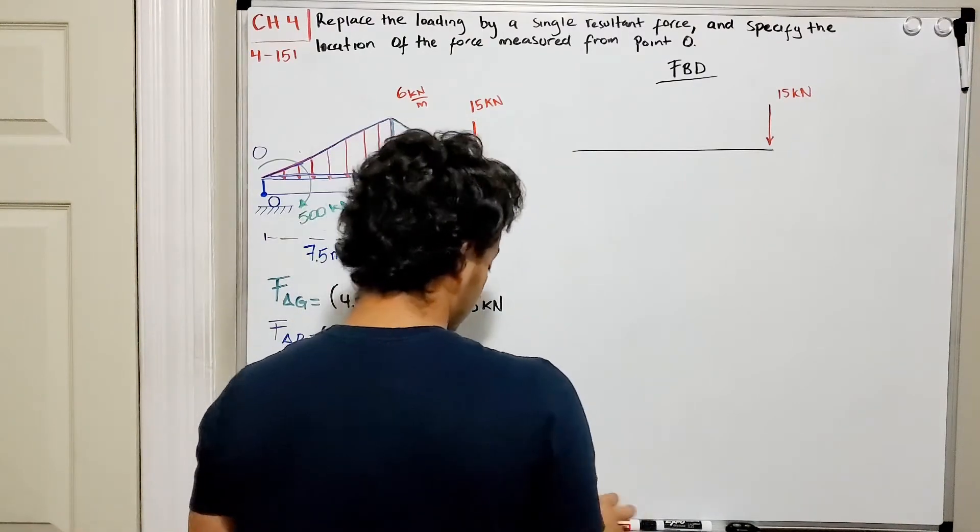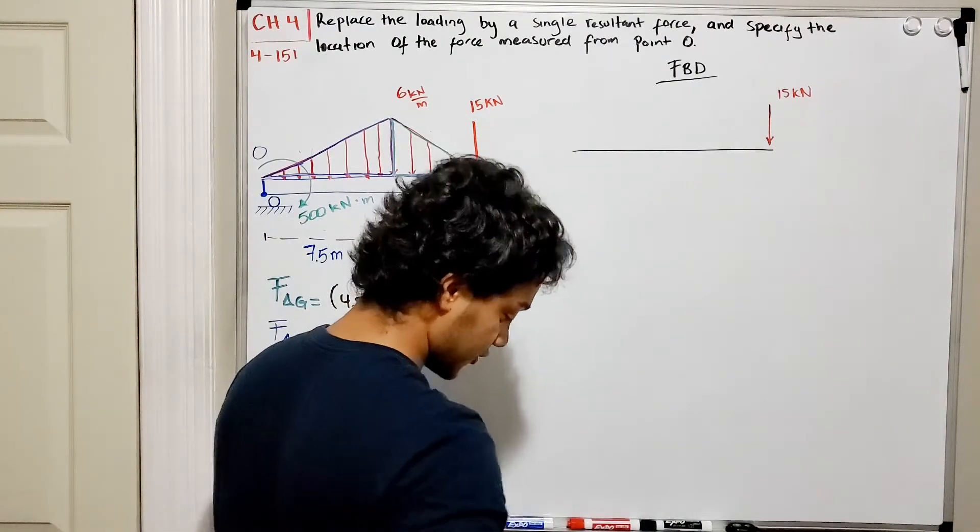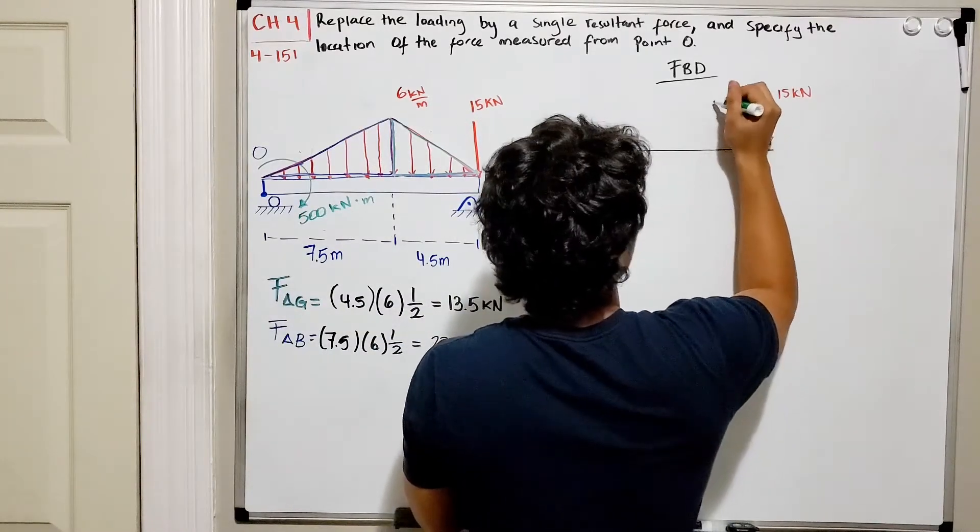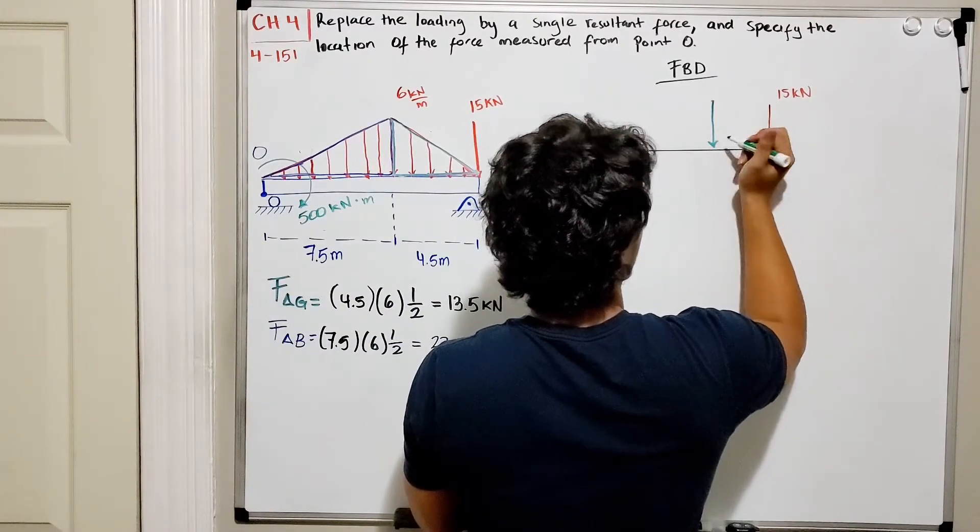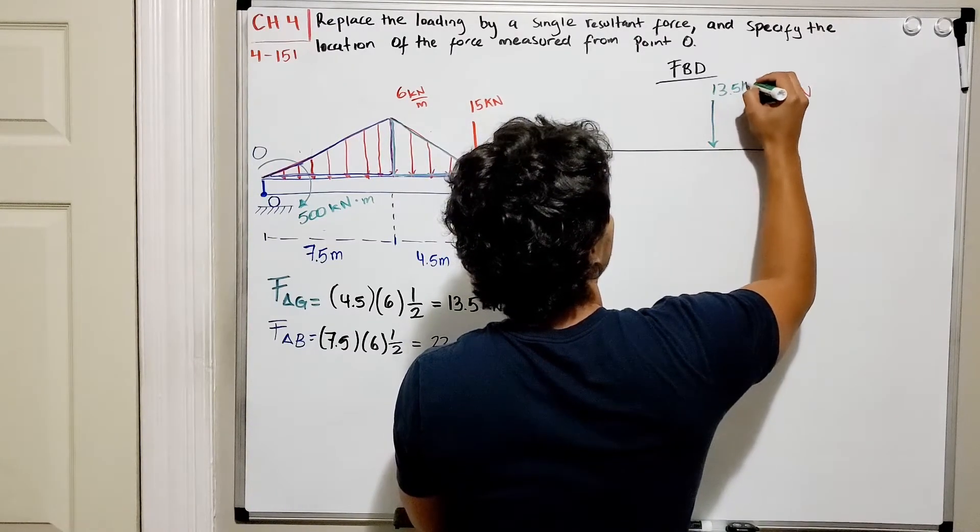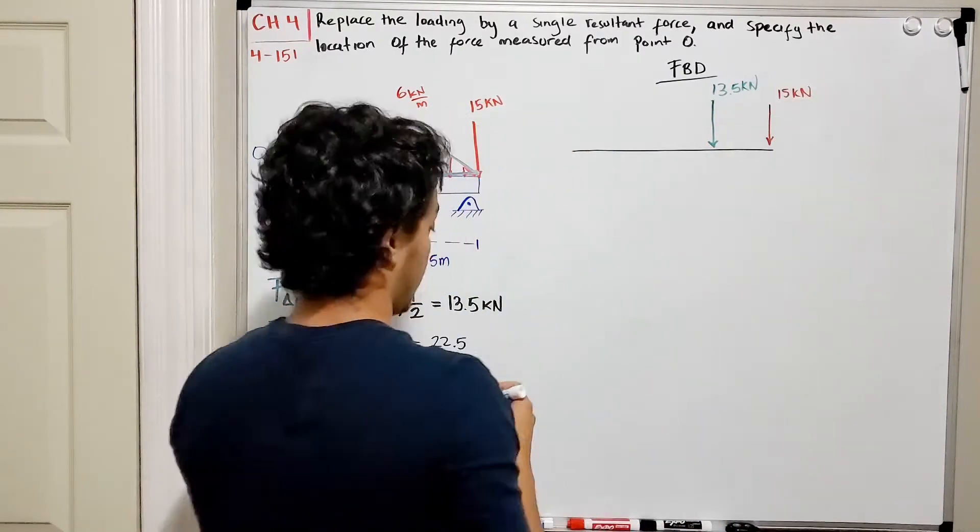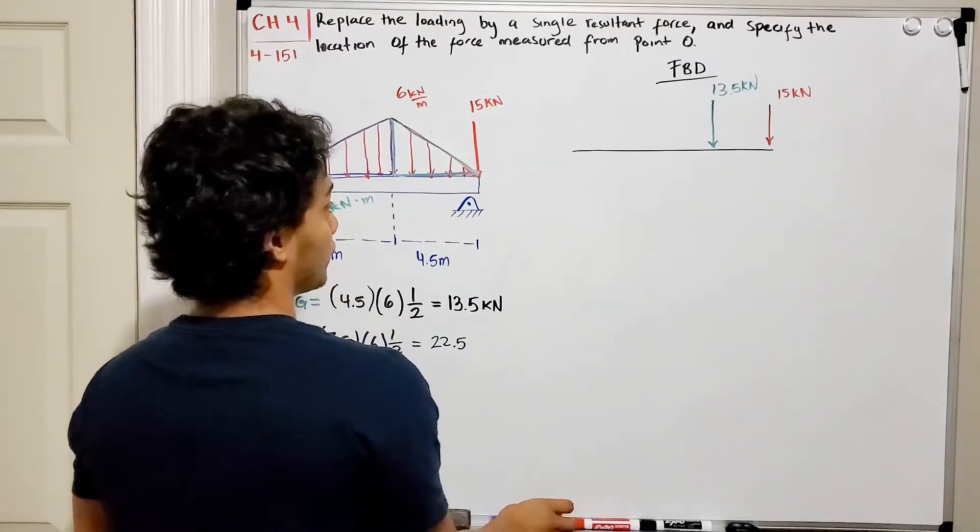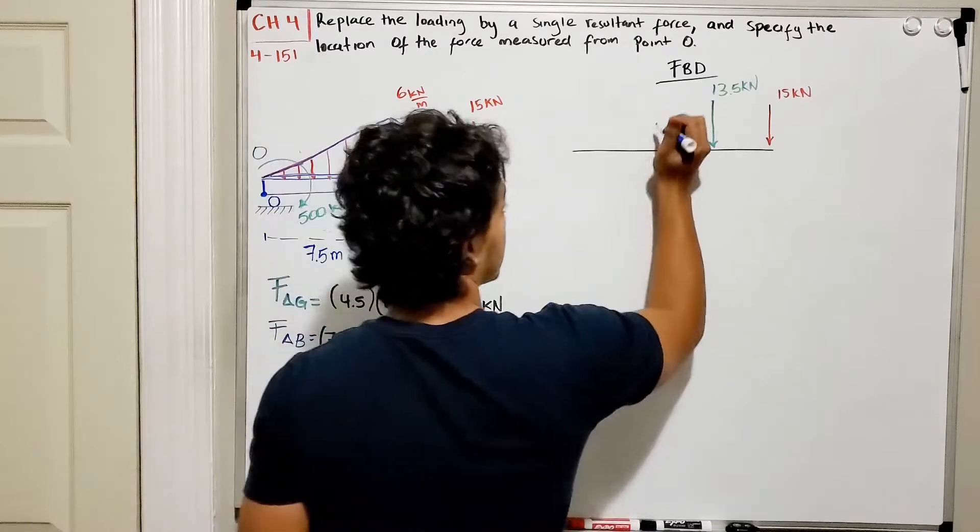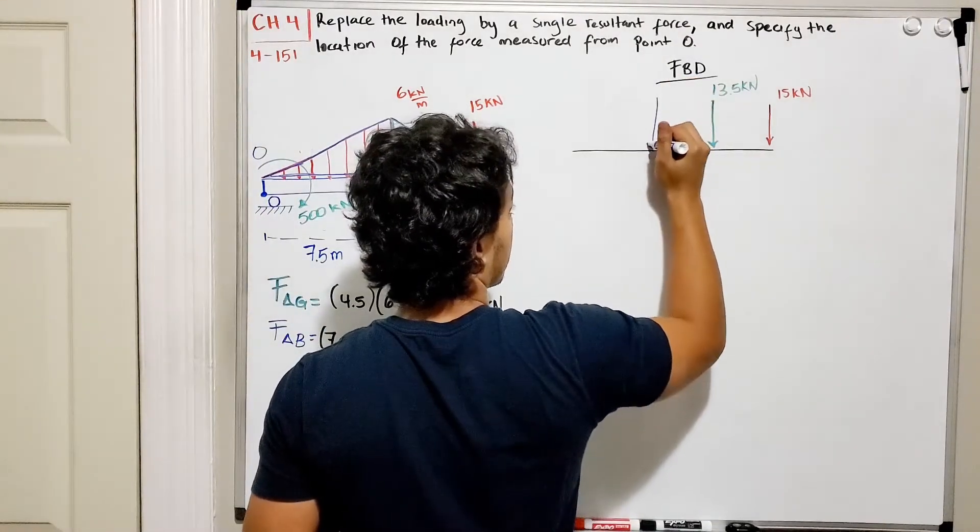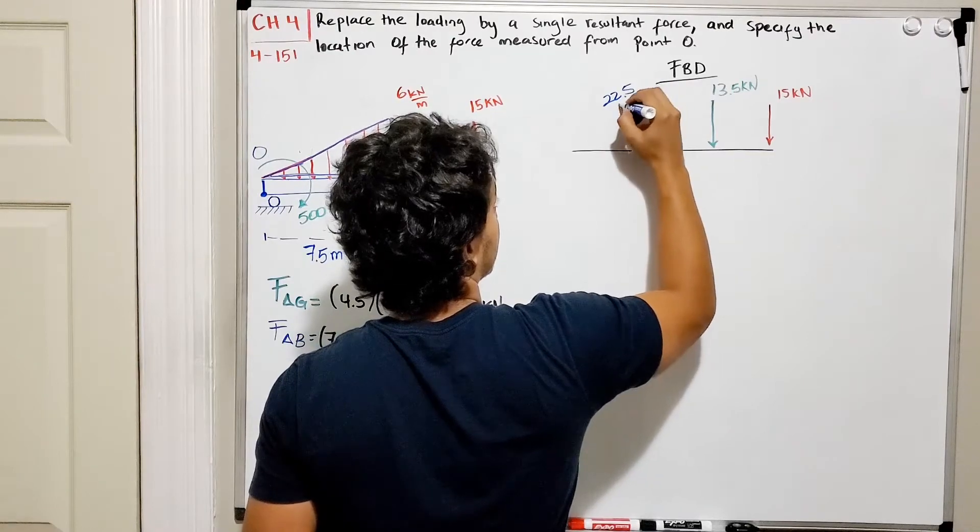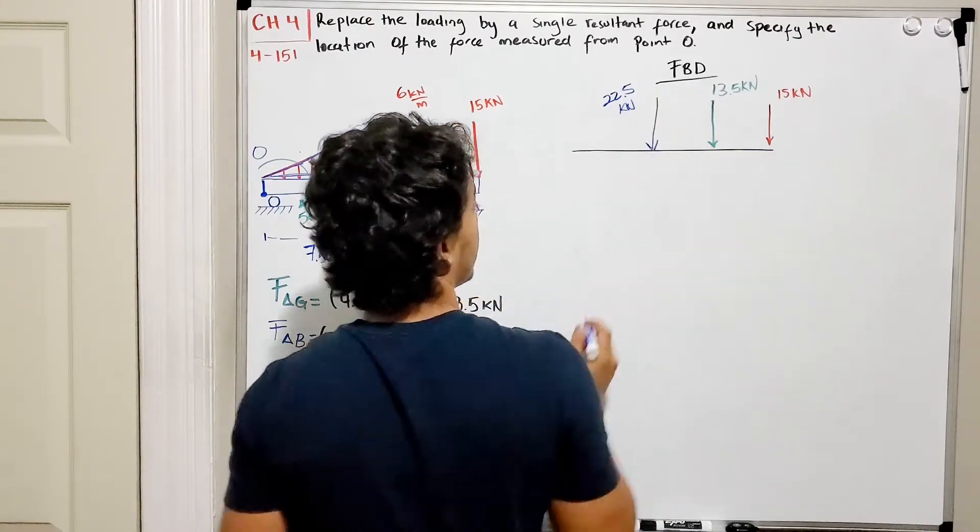Then I have my green distributed load that is equal to 13.5 kN. It's placed around here and this is equal to 13.5 kN. And then our blue one over here is equal to 22.5 kN.